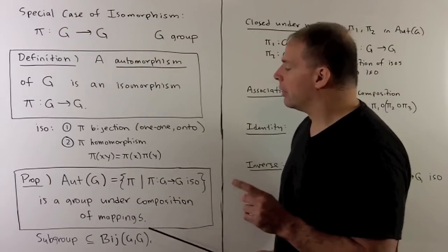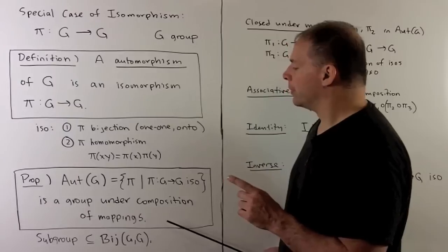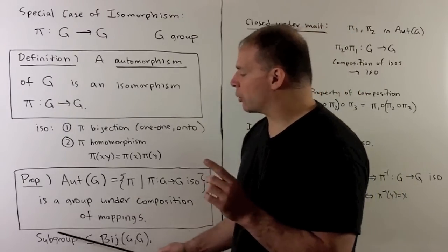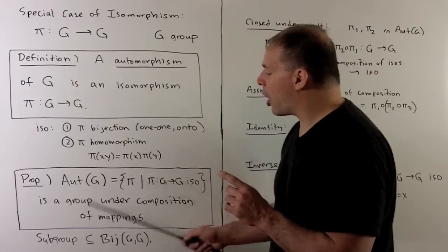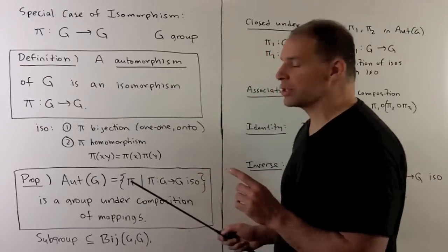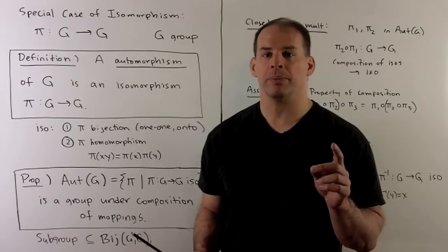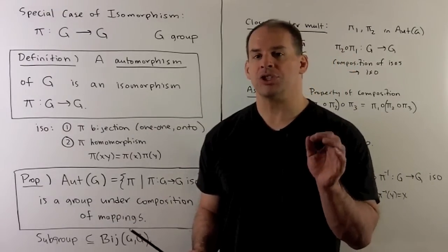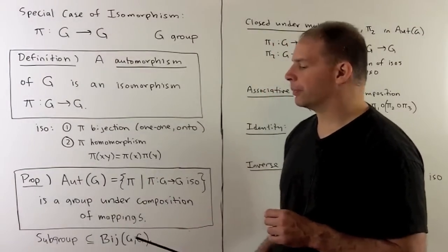Because of this result, Aut(G) sits as a subgroup inside the larger group of all bijections from G to itself. Let's show Aut(G) is a group.